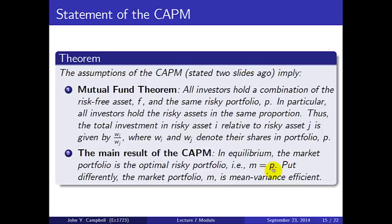The second piece, which is the main result of the CAPM, is that in equilibrium the market portfolio is the optimal risky portfolio — in other words, M is the same as P. Put another way, the market portfolio M is mean-variance efficient. So if somebody asks you in one sentence what the CAPM says: the market portfolio is mean-variance efficient.